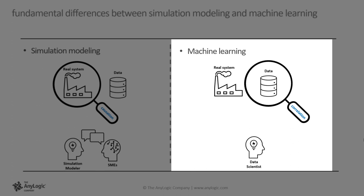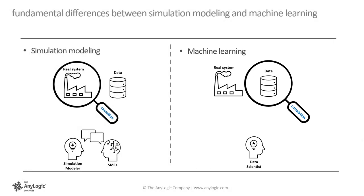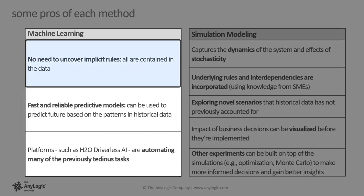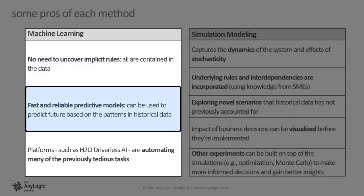In contrast, machine learning gains its power from stored information in past data. In building a machine learning model, the data scientist focuses on uncovering the patterns and correlations in the data. In most cases, uncovering these patterns does not require a focus or a study into the real system's operation. Now, let's take a look at pros of each method and where they shine. In machine learning, there is no need to uncover all the hidden drivers, interdependencies, and implicit rules of the real system. The outcome of these are present in the data. We can get fast and reliable predictive models when there is plenty of accessible, clean, labeled data.